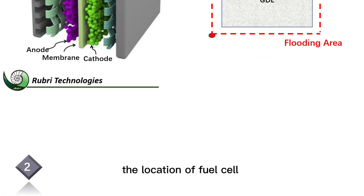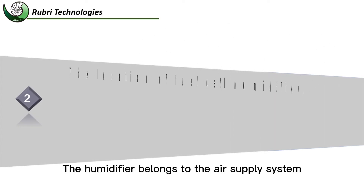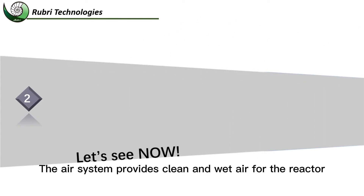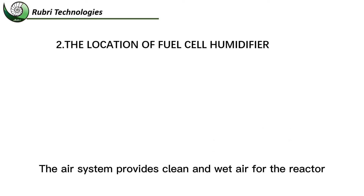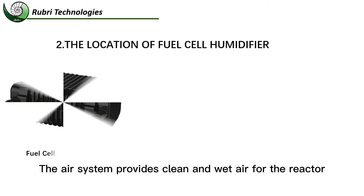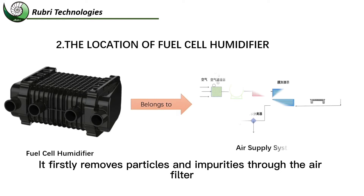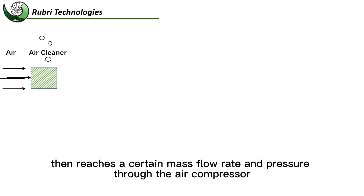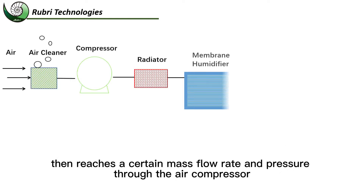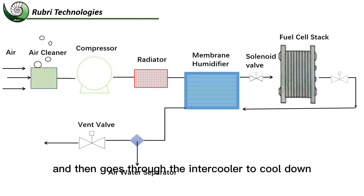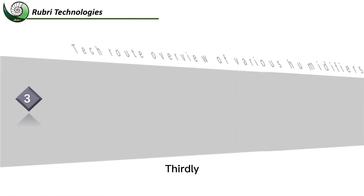Secondly, the location of the fuel cell humidifier — it belongs to the air supply system. The air system provides clean and wet air for the reactor. It firstly removes particles and impurities through the air filter, then reaches a certain air flow rate and pressure through the air compressor, and then goes through the intercooler to cool down.